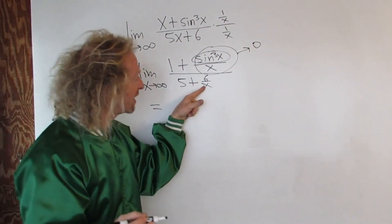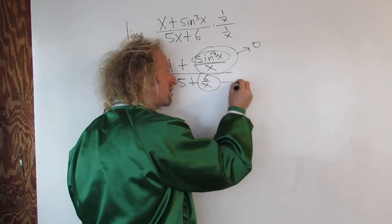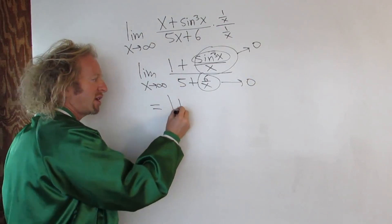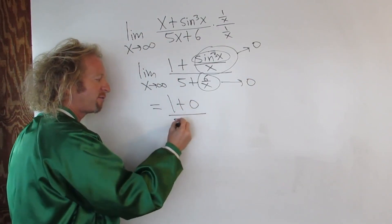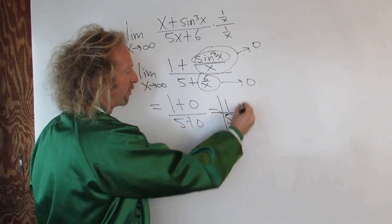Likewise, this is 6. And then x is getting really, really big. So this is also going to 0. So we end up with 1 plus 0 over 5 plus 0, which is 1 over 5.